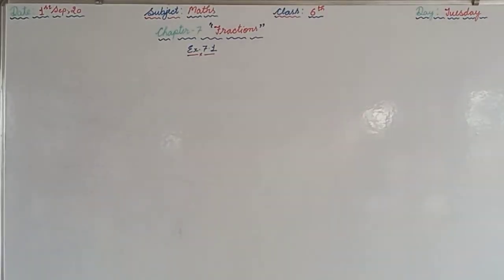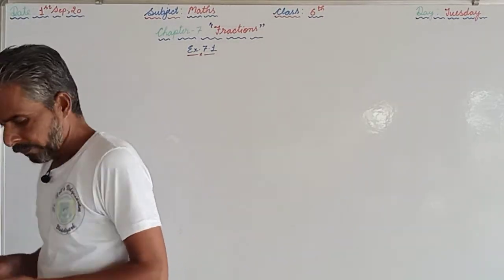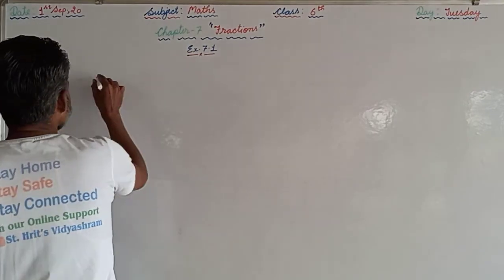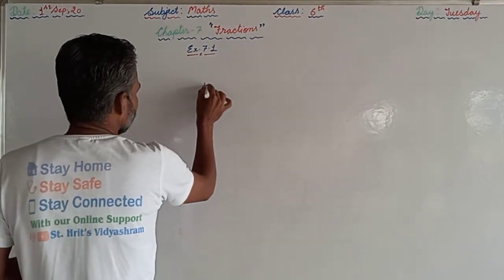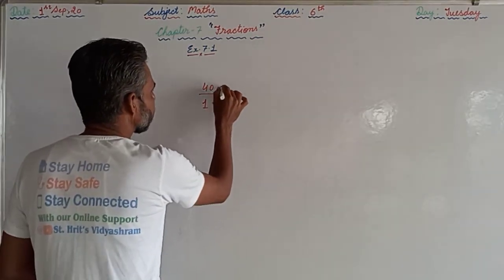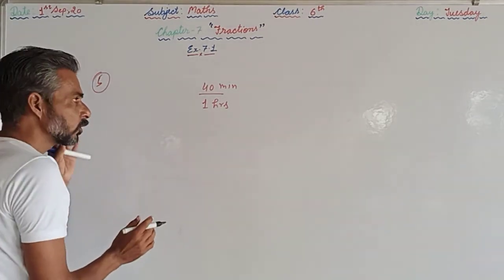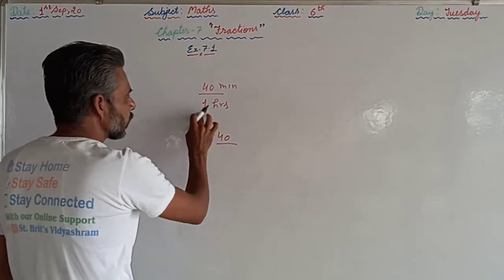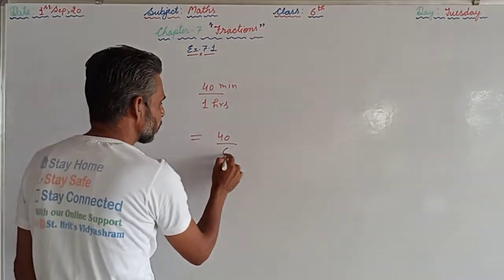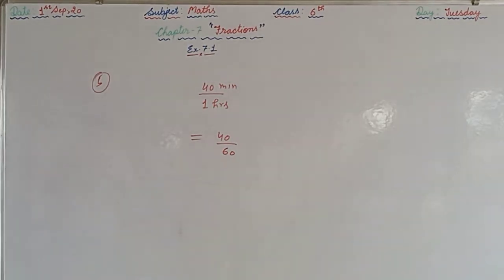Question 5 asks: what fraction of an hour is forty minutes? We need the ratio of forty minutes to one hour. Both quantities must be in the same units. One hour equals sixty minutes, so the answer is forty upon sixty.